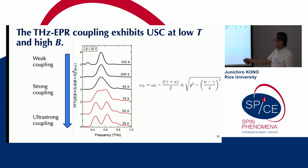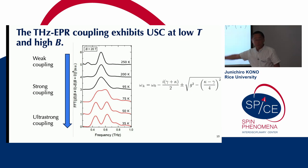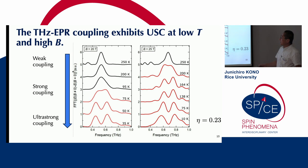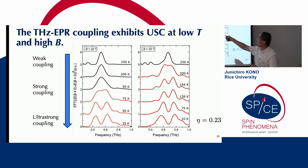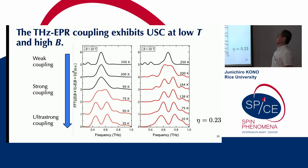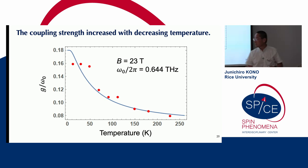This exceptional point, which depends on the magnetic field, is about 80 Kelvin at 20 Tesla. At 25 Tesla, the exceptional point is higher, closer to room temperature. We were able to fit our data to deduce the coupling constant as a function of magnetic field.